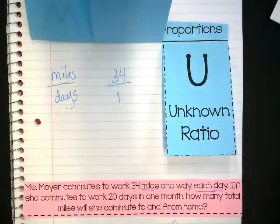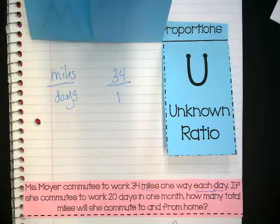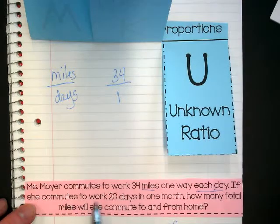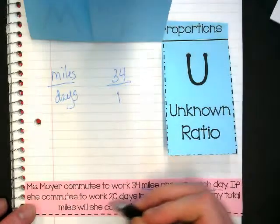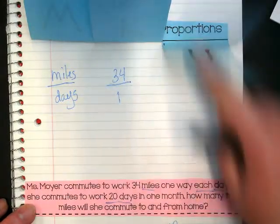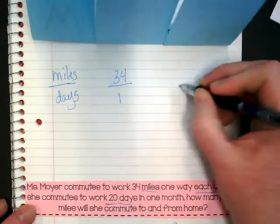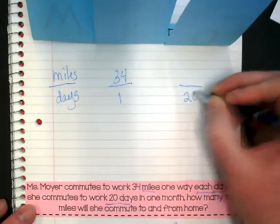Now we're going to set up our unknown ratio. This is where the question in the word problem comes in. If she commutes to work 20 days in one month, there we go. We know how many days, so we can go to our unknown ratio, and we can fill in that it's 20 days.